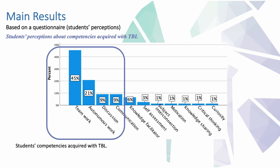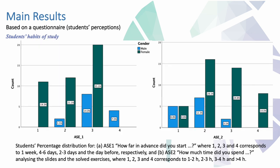To answer the first research question — what competences were required with TBL methodology — students completed a questionnaire delivered at the end of the TBL activity in week 3. The gathered data show that students identify teamwork, autonomous work, and discussion and communication as the most developed skills. As a curiosity, the way students study differs between female and male students: female students study the materials more in advance and spend more time in their study.